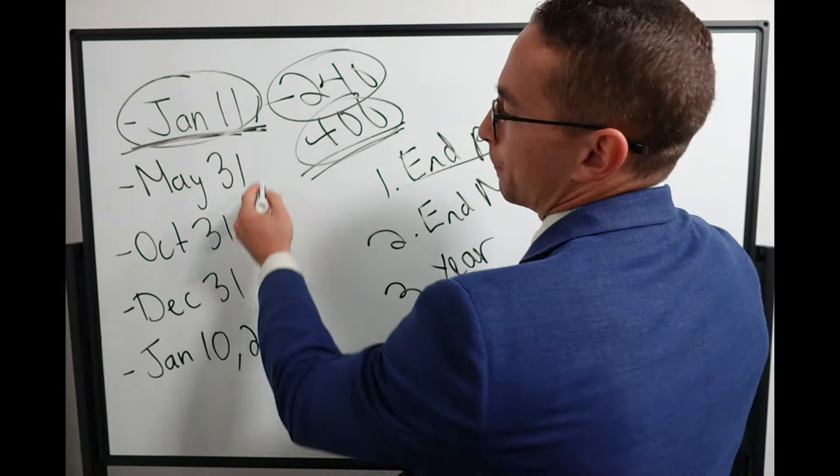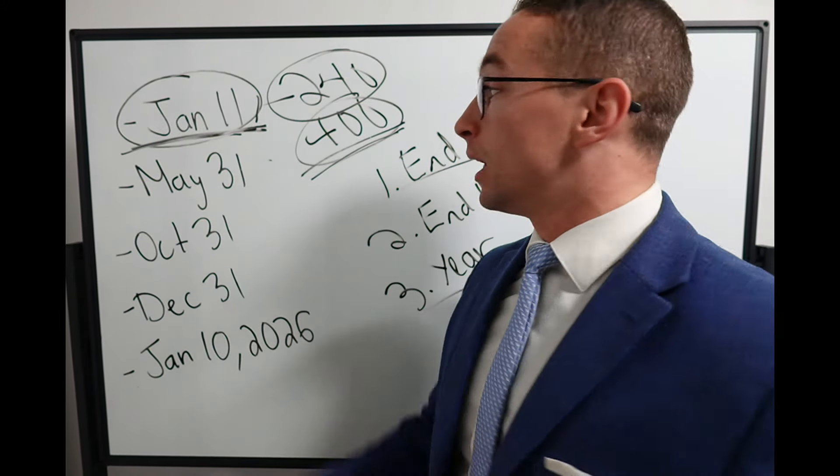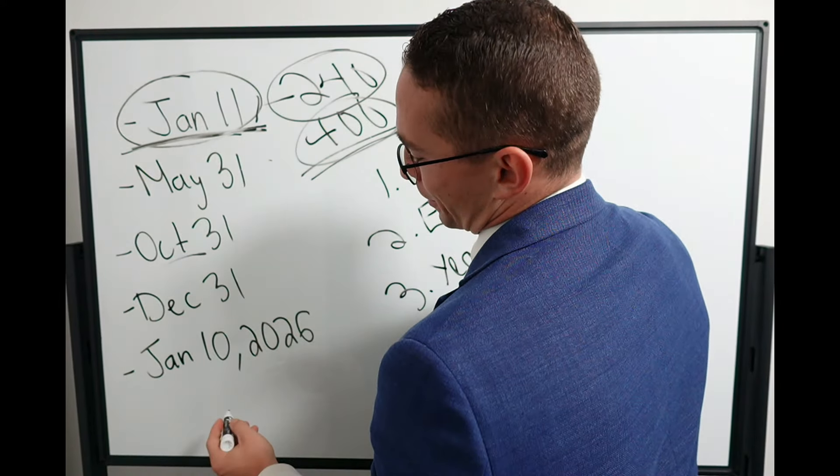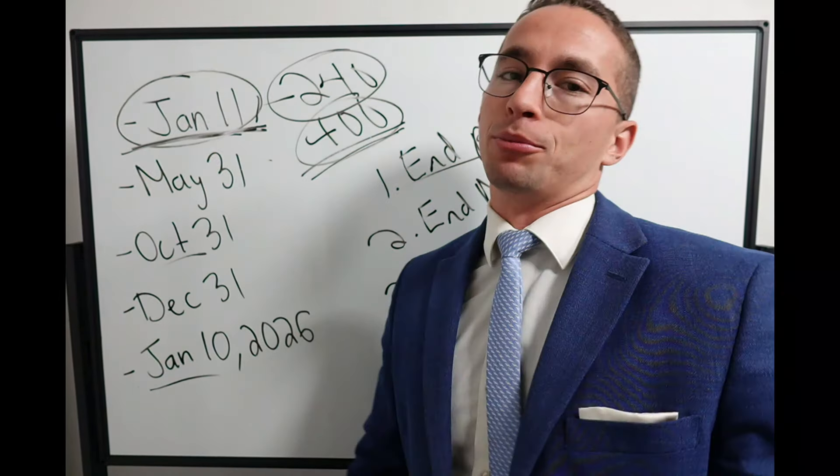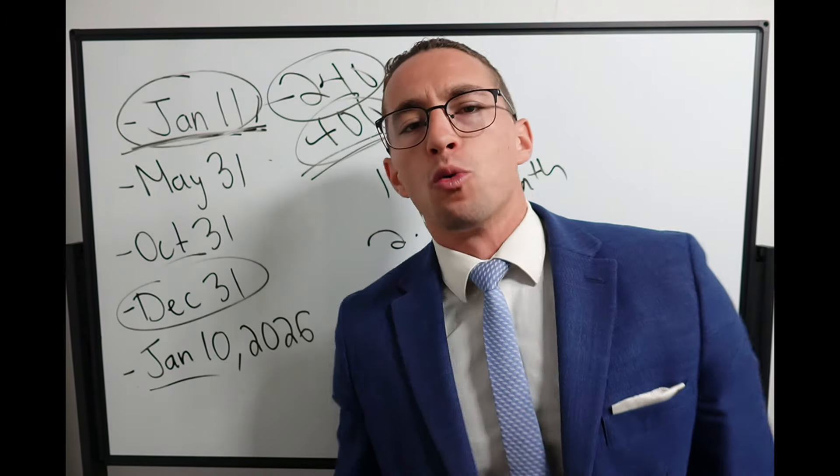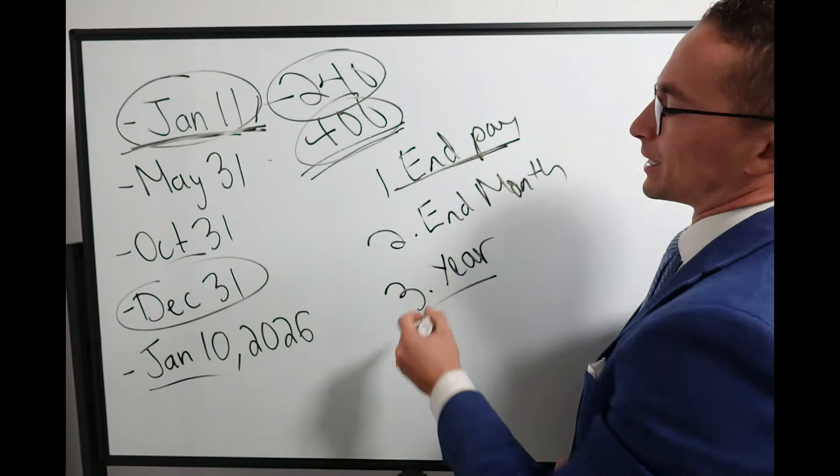So May 31st is the end of a pay period and the end of the month. We'll talk about why the end of the month is important as well. October 31st is the end of a pay period. January 10th is the end of the pay period. December 31st is not the end of the pay period, but we'll talk about why a lot of people still do December 31st in just a second.